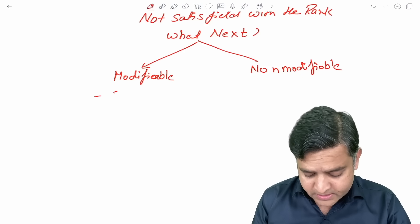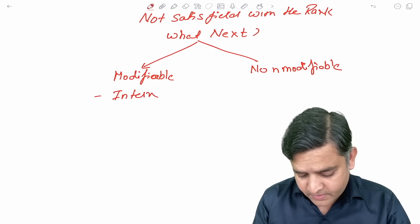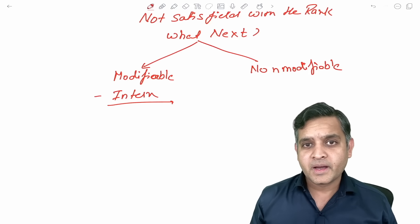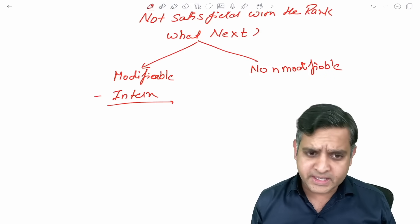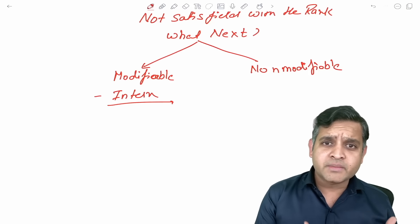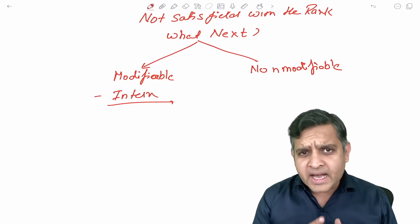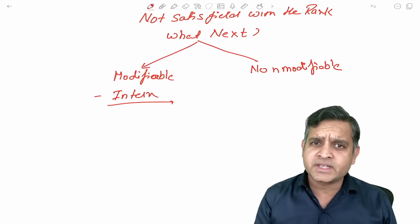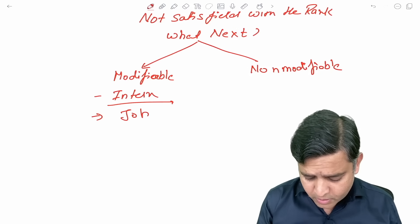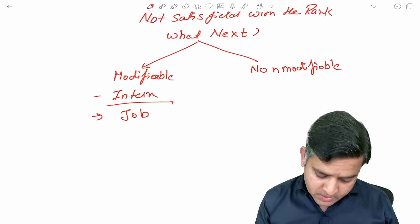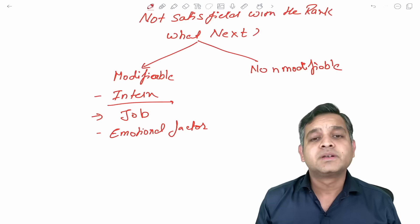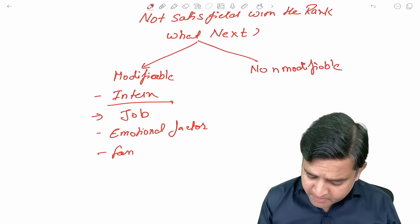Now what are the modifiable factors? The biggest factor which is modifiable is you were an intern, your internship was going on or you just finished your internship. We call them as a zero attempt, some people call it as a first attempt. If it was with an internship attempt where you felt that a lot of time has gone for the internship, whatever rank that you have got, if you are not satisfied with that particular rank, take an attempt.